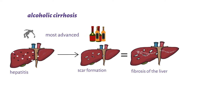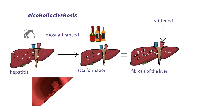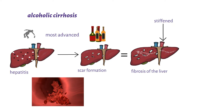Fibrosis of the liver leads to structural and functional impairment of both the liver and the blood vessels in the liver. The blood vessels become stiffened, and this stiffening interferes with vasoconstriction and vasodilation, which is important in blood pressure regulation. This change causes increased pressure in the veins carrying blood to the liver, also termed portal hypertension.